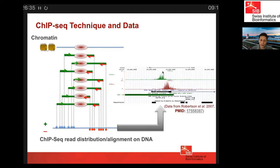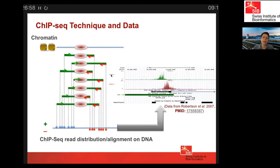Here we have a view of read alignment on a specific STAT1 locus at the UCSC Genome Browser. This locus represents the promoter region of a known STAT1 target gene, ICAM1. We see the plus strand reads in green and the minus strand reads in red.